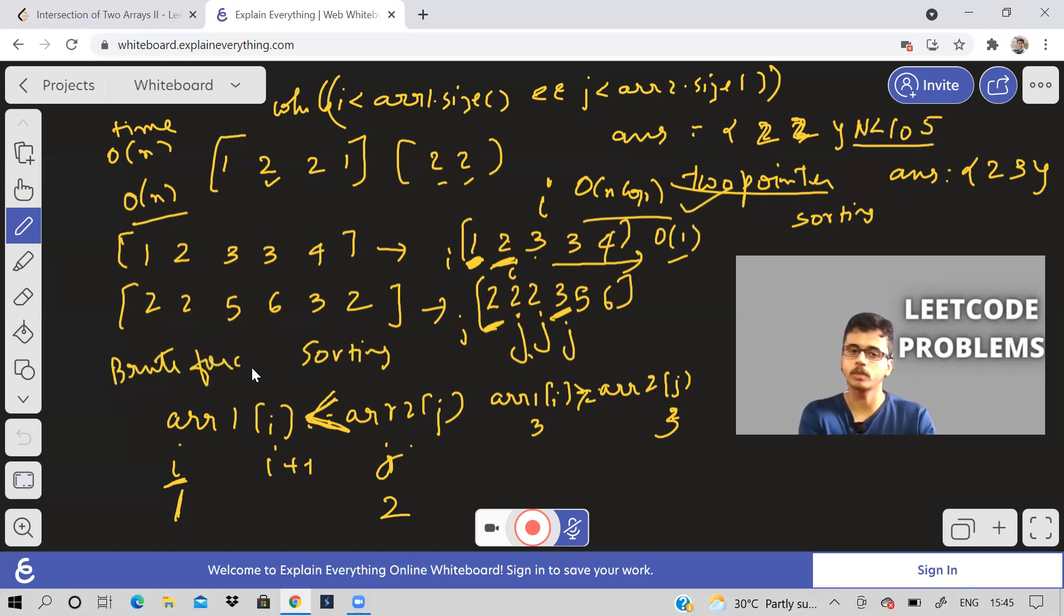In this problem, especially this problem, you can do brute force, but I discussed two pointer method, because if the constraint was very large, then you will have to apply different algorithm. So that is this method.